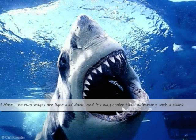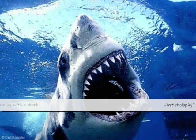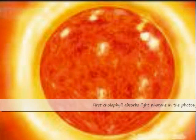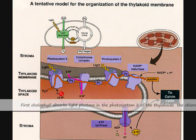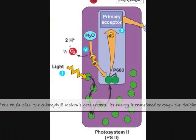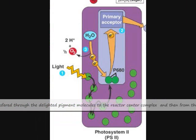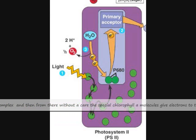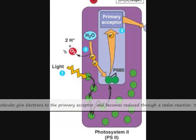The two stages are light and dark, and it's way cooler than swimming with a shark. First, chlorophyll absorbs light photons in Photosystem II of the thylakoid. The chlorophyll molecule gets excited. Its energy is transferred through the pigment molecules to reaction centers in their complex, and then the special chlorophyll-a molecules give electrons to the primary acceptor and become oxidized through a redox reaction.